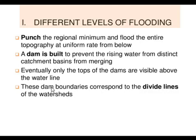A dam is built to prevent rising water from distinct catchment basins from merging. See, if there is a large water resource, due to rains it may become overflowing if water from other water resources meets it. For this we build dams. The dam boundaries correspond to divide lines of the watersheds. Dams differentiate different watersheds.